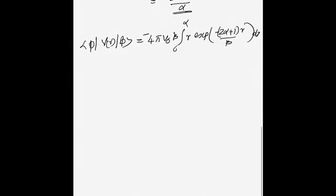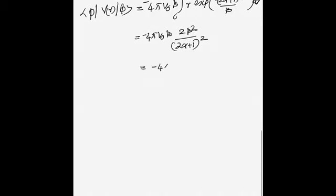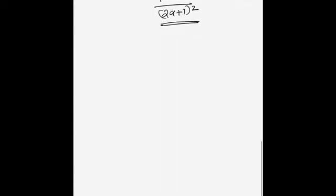For the potential term with the Yukawa potential, substituting gives −4πV₀β ∫₀^∞ r · e^(−(2α+1)r/β) dr. Applying the standard integral, this evaluates to −4πV₀β · 2β²/(2α+1)², giving the potential contribution.